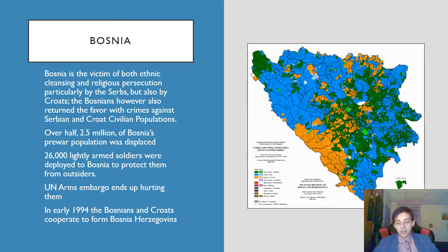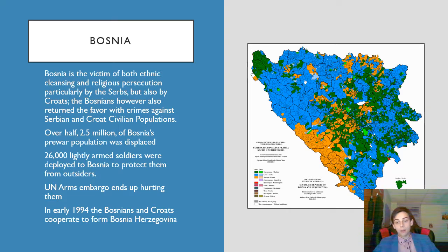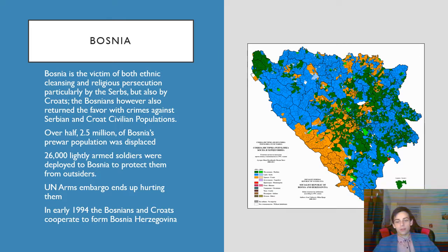Bosnia — not specifically Bosniaks the ethnic group, but the citizens of the Bosnian autonomous region — are also the poorest. This extends to armament too. When the UN imposed an arms embargo against all of Yugoslavia, it actually benefited the enemies of the Bosnians because their enemies were better armed. The status quo favors the wealthier, better-armed Serbs, who get 26,000 troops as opposed to 13,500.